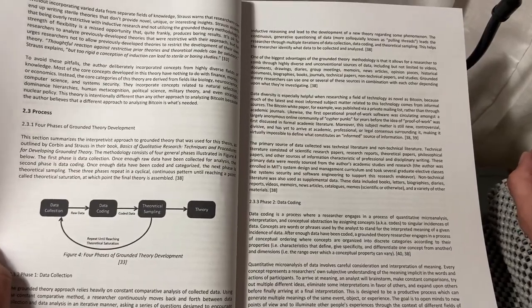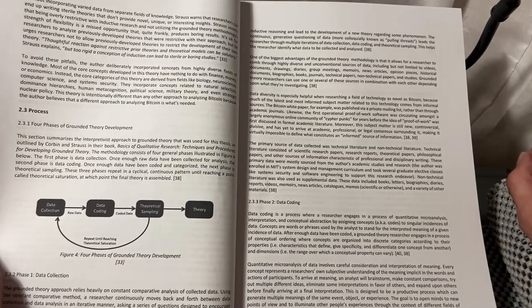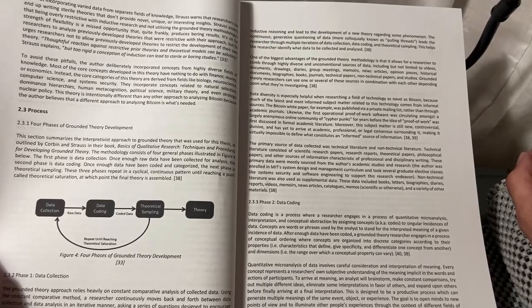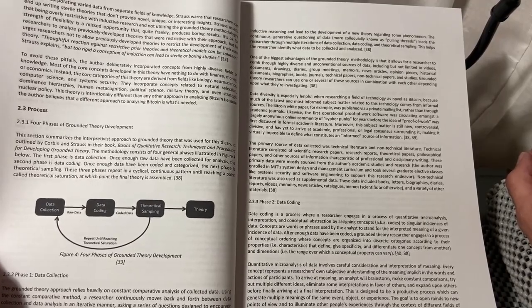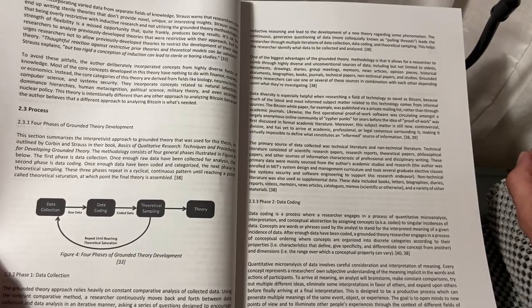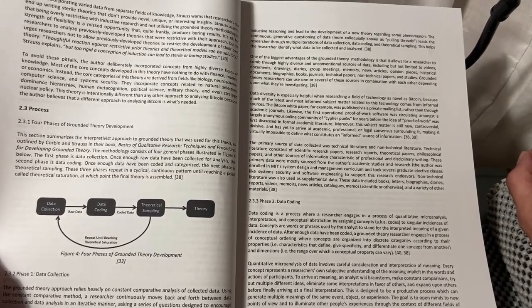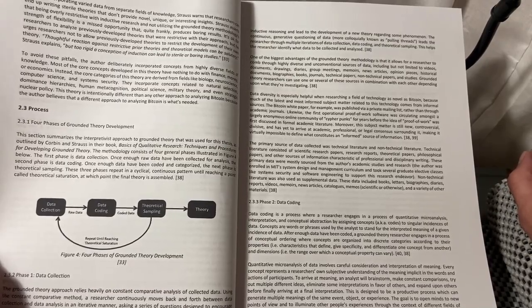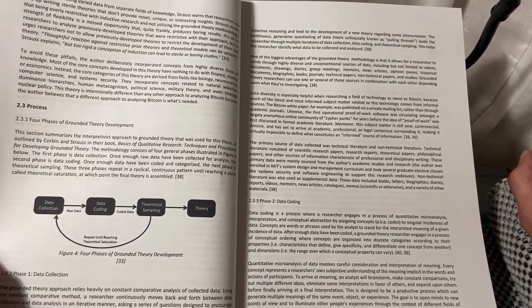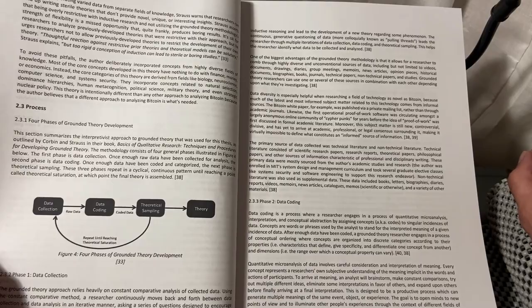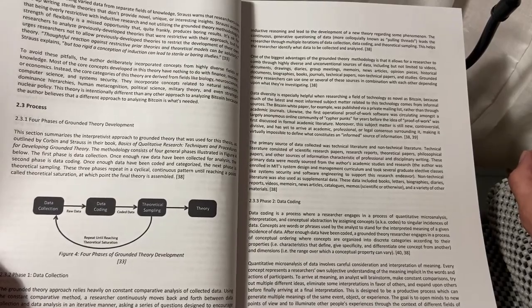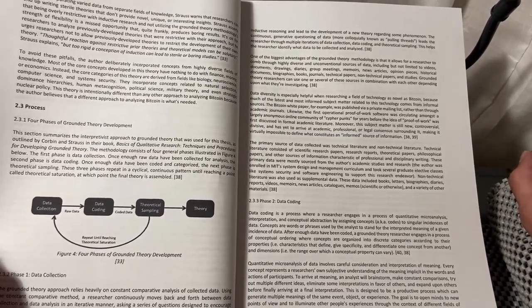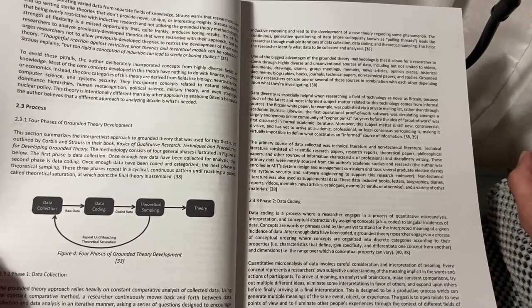To avoid these pitfalls, the author deliberately incorporated concepts from highly diverse fields of knowledge. Most of the core concepts involved in this theory have nothing to do with finance, money, or economics. Instead, the core categories of this theory are derived from fields like biology, neuroscience, computer science, and systems security. They incorporate concepts related to natural selection, dominance hierarchies, human metacognition, political science, military theory, and even strategic nuclear policy. This theory is intentionally different than any other approach to analyzing Bitcoin because the author believes that a different approach to analyzing Bitcoin is what's needed.